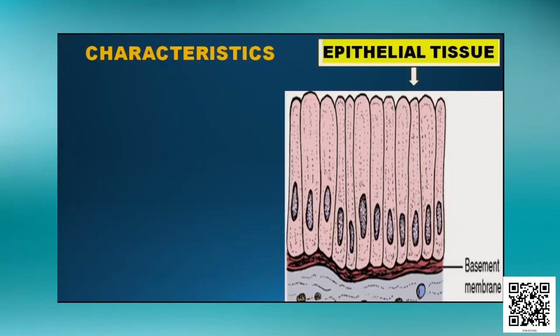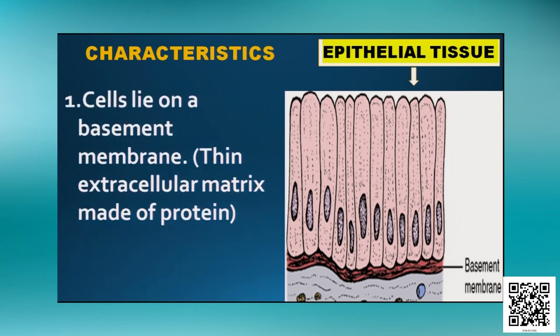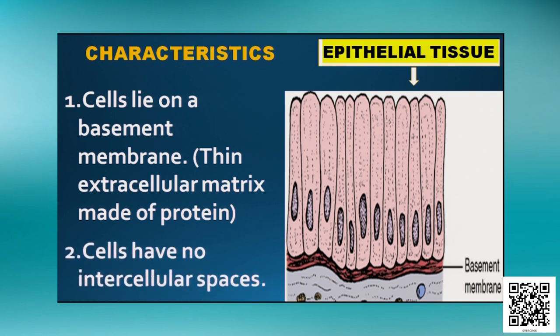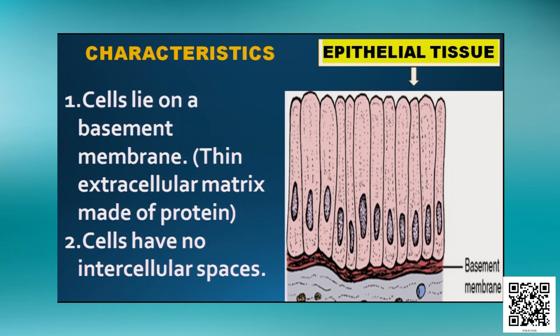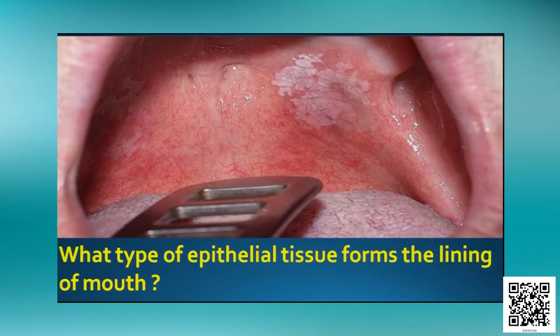Look at the picture of epithelial tissue. The cells lie on a membrane called the basement membrane, which is not a cell — it is made up of protein. The cells are tightly packed with no intercellular spaces. These are the characteristics of every epithelial tissue. Let us find out where epithelial tissue is found.